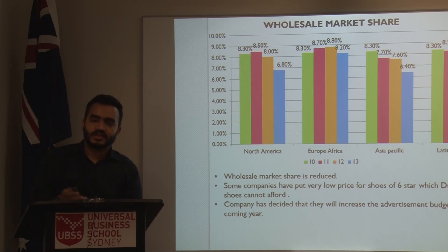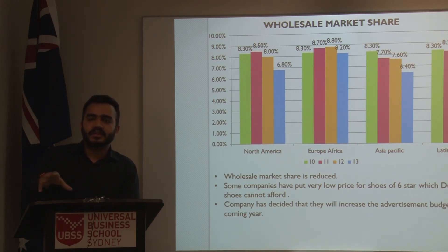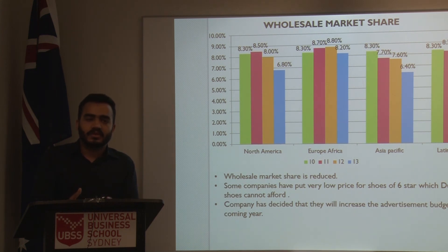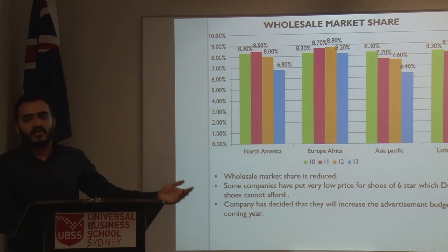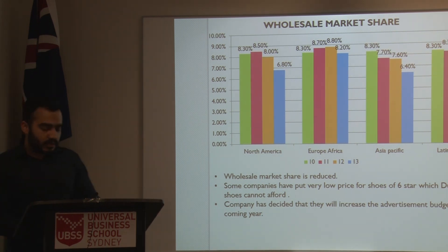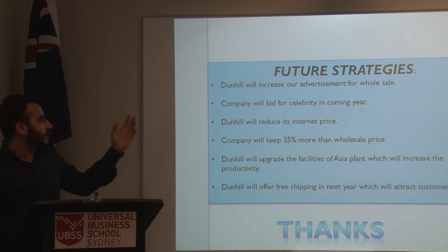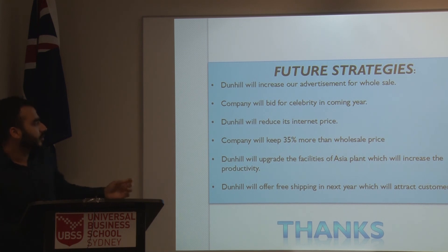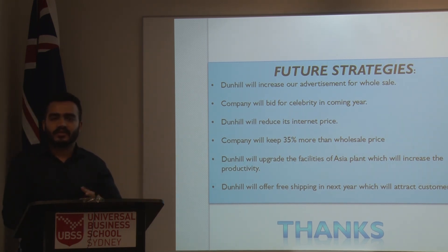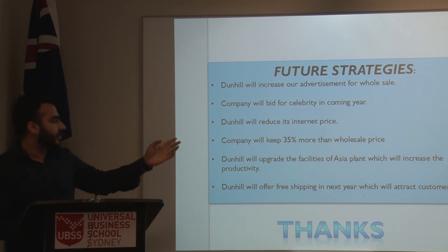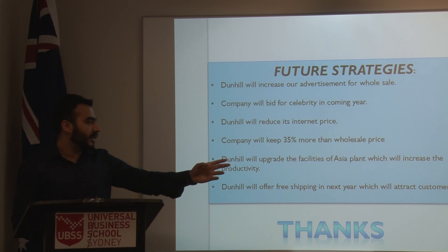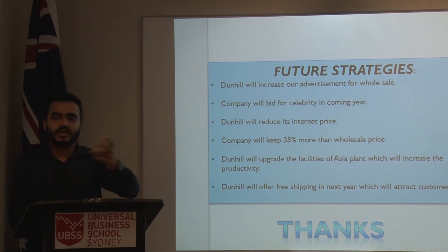For our six-star shoes, we cannot afford to match competitor pricing — at the snapshot, other companies are still selling at a lower price than us, but we cannot afford to do that because we are already in loss. The company has decided to invest in marketing for our brand. In the future, we will increase advertisement for wholesale, and the company will also bid for celebrity endorsements — film and sports celebrities. We will reduce our internet price, upgrade the Asia Pacific facility, increase productivity, and offer free shipping next year.